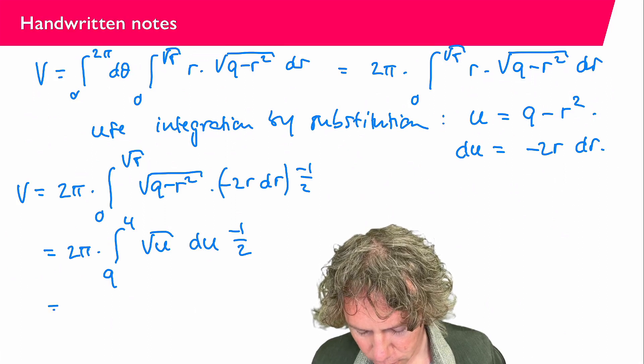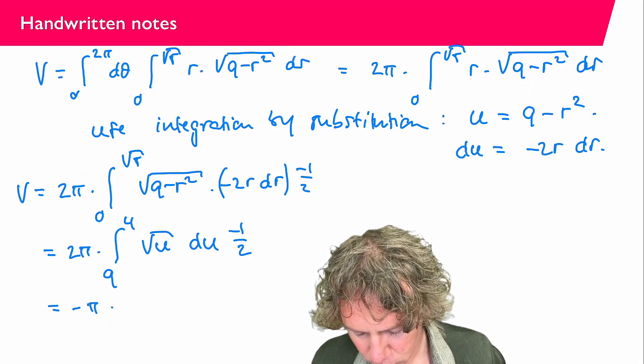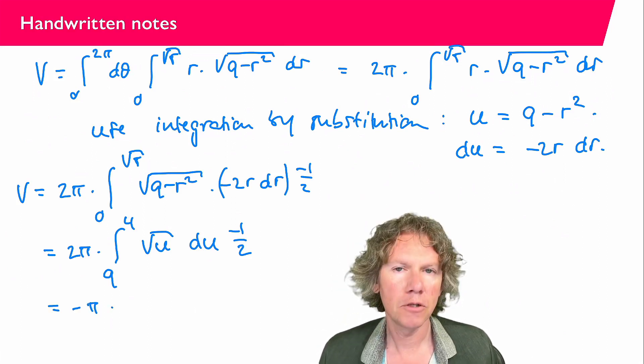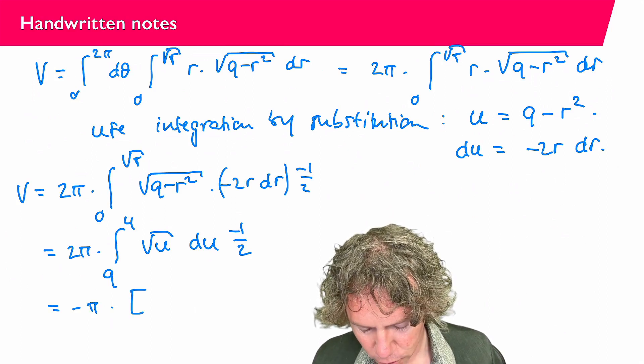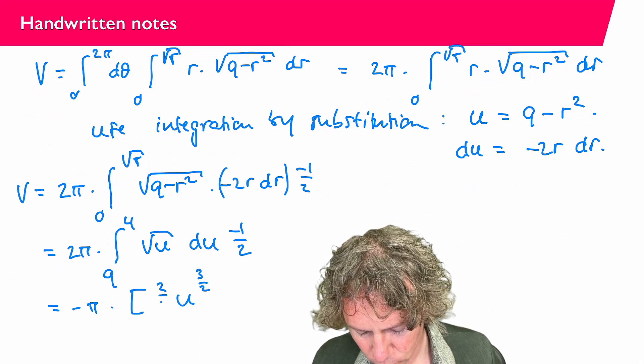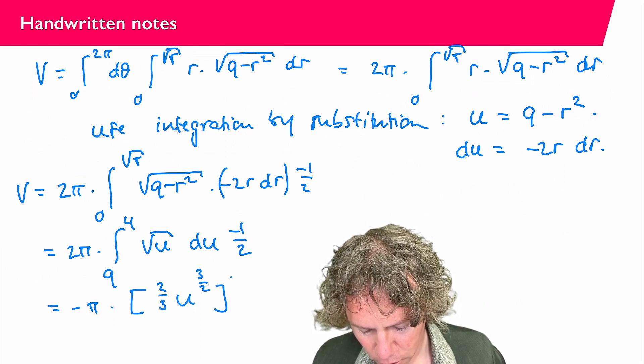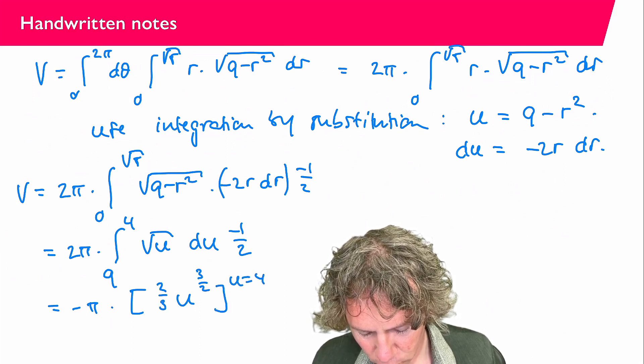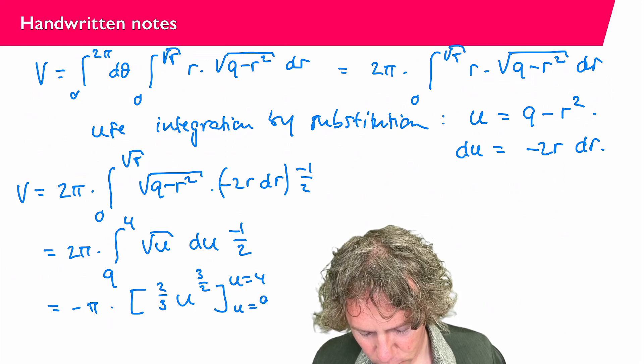So I find minus pi times. Then I need to find an antiderivative of the square root of u. That's u to the power of 3 over 2. 2 thirds. In between u equals 4. U equals 9.